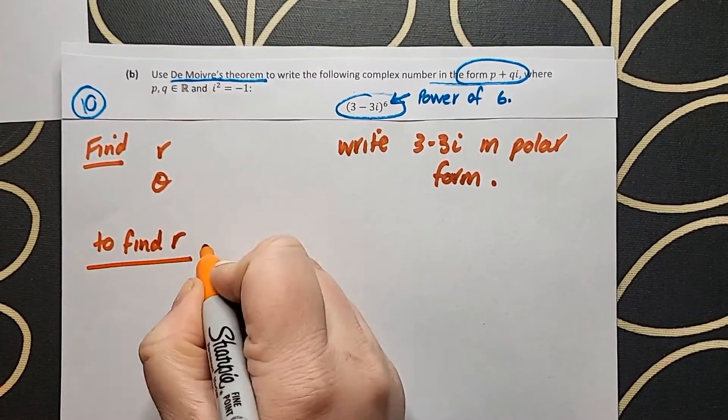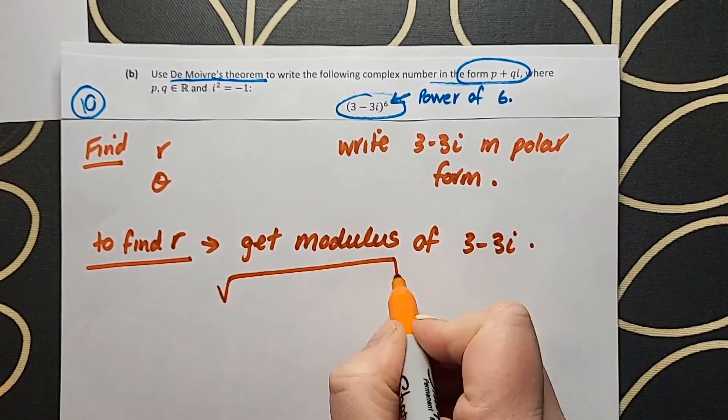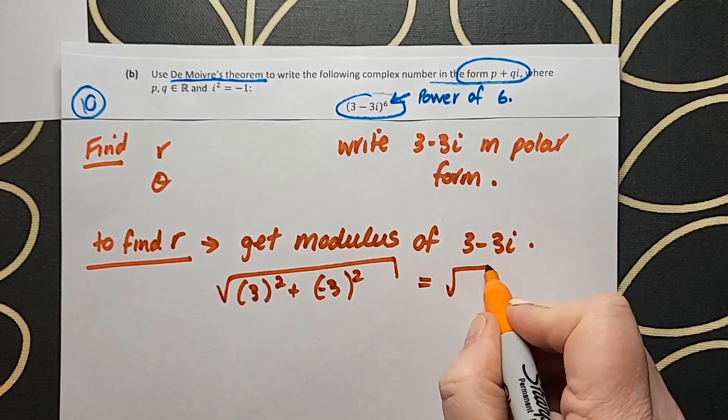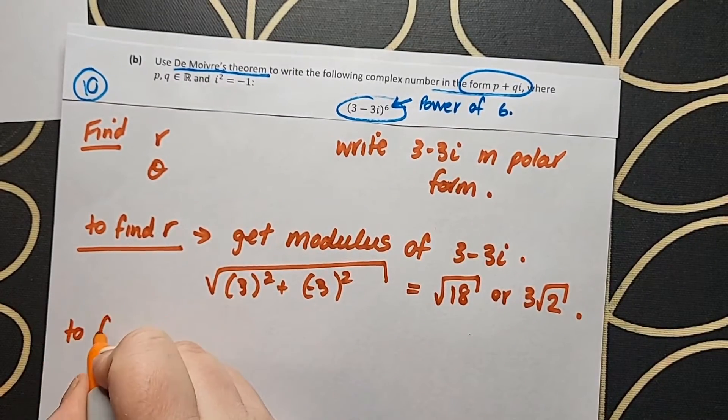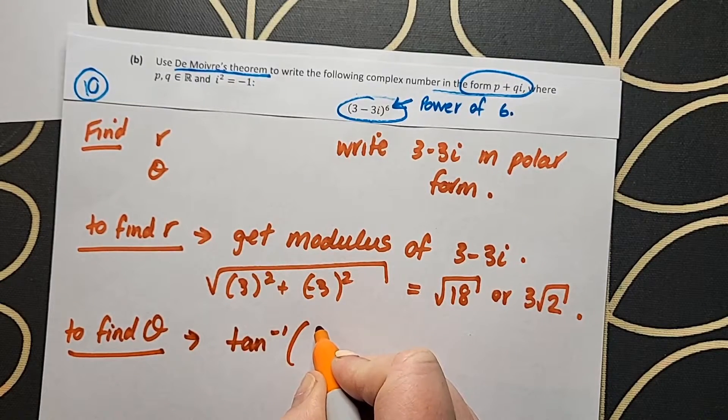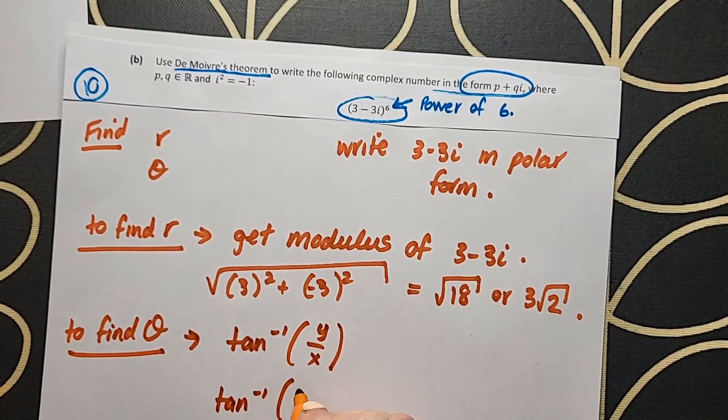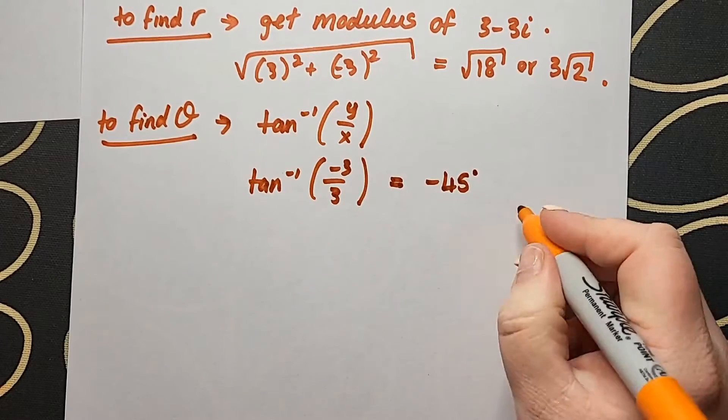In order to be able to do De Moivre's theorem, you need 3 things: you need an r, you need a theta, and you need to write the complex number in polar form. We put the power of 6 to the side for the moment while we deal with this. Finding r I'm getting the modulus of that 3 minus 3i, and for theta I'm getting tan inverse of the imaginary part over the real part. When I do that I get negative 45.